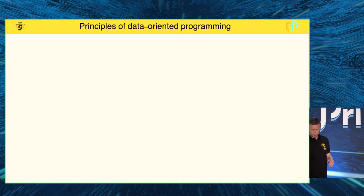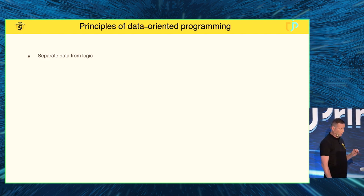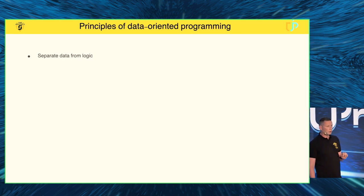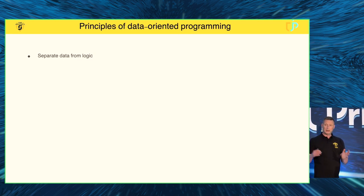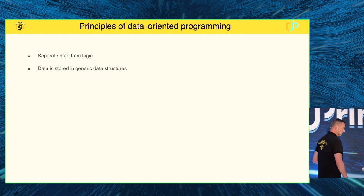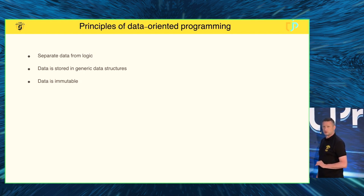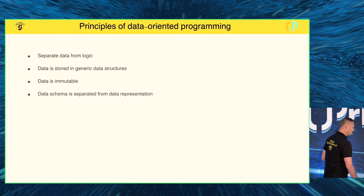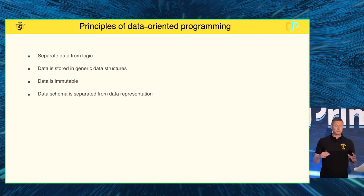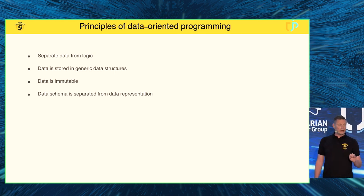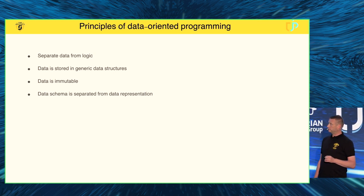So what are these principles? We'll look at them first, then dive into details. The first one is: you should separate data and logic. The second: you should store data in generic data structures. The data should be immutable, and the data schema should be separated from data representation.